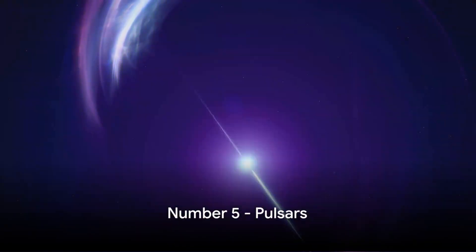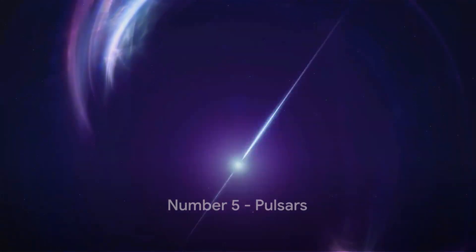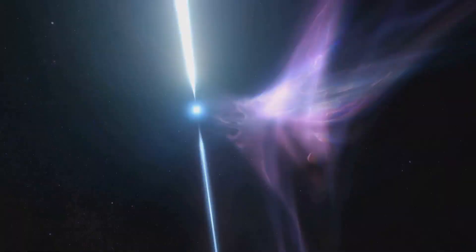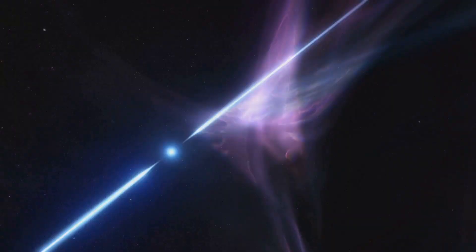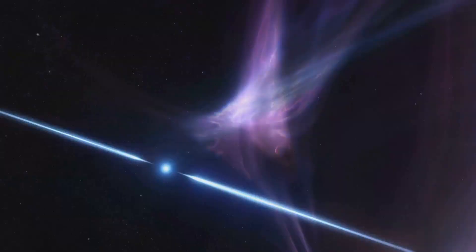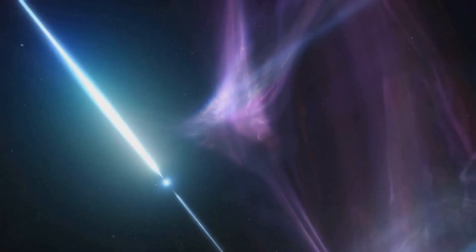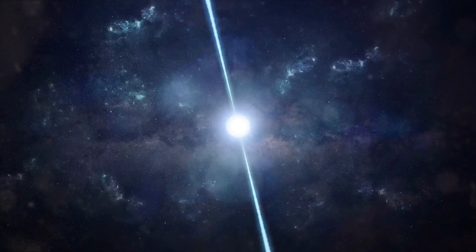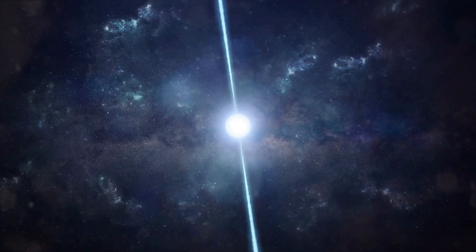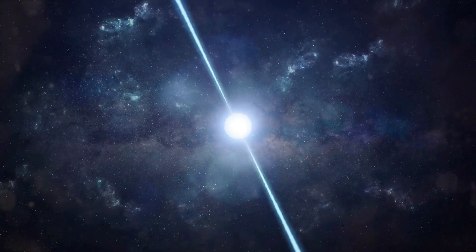Coming in at number five, we have the cosmic lighthouses, the pulsars. These celestial phenomena are essentially rotating neutron stars that emit beams of electromagnetic radiation. Imagine a lighthouse in space sending out signals at regular intervals. That's what a pulsar does. Only its signals are radio waves that can travel across the vast expanse of the universe.